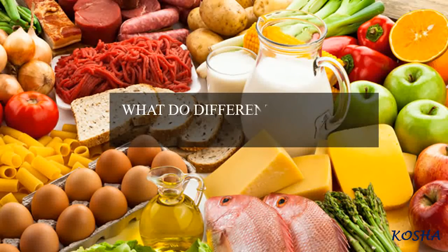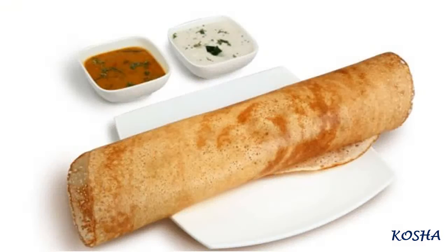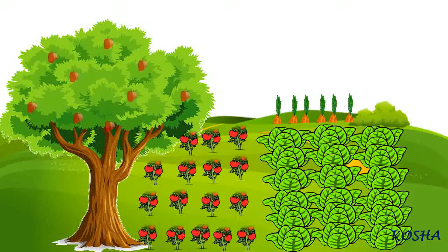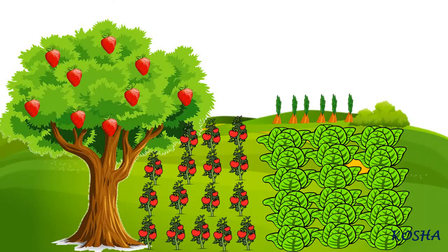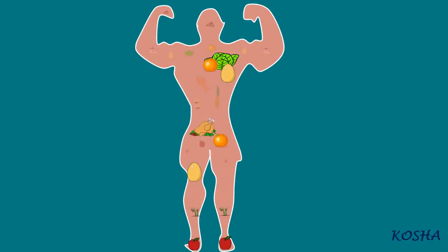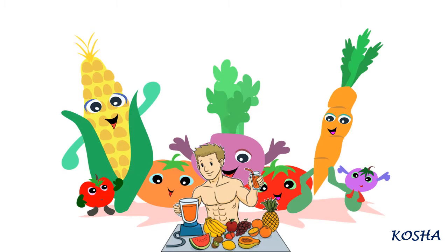What do different food items contain? We know that each dish is usually made up of one or more ingredients, which we get from plants or animals. These ingredients contain some components that are needed by our body. These components are called nutrients.